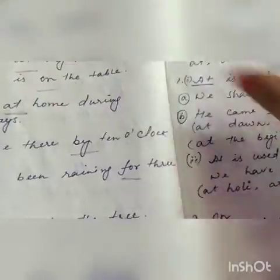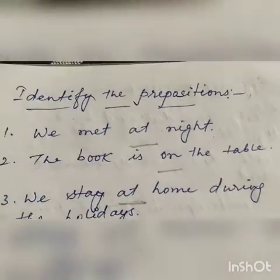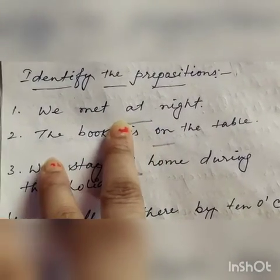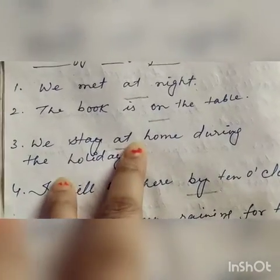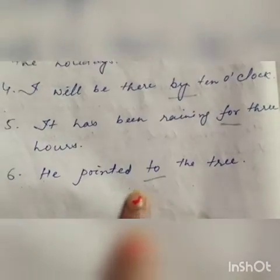There was another practice work for Class 8. I arranged this practice work with the video last day by a photo. You can see this is the same question — identification of prepositions. 'We meet at night' — 'at'. 'The book is on the table' — 'on'. 'We stay at home during the holidays' — 'at'. 'I will be there by 10 o'clock' — 'by'. 'It has been raining for three hours' — 'for'. 'He pointed to the tree' — 'to'.